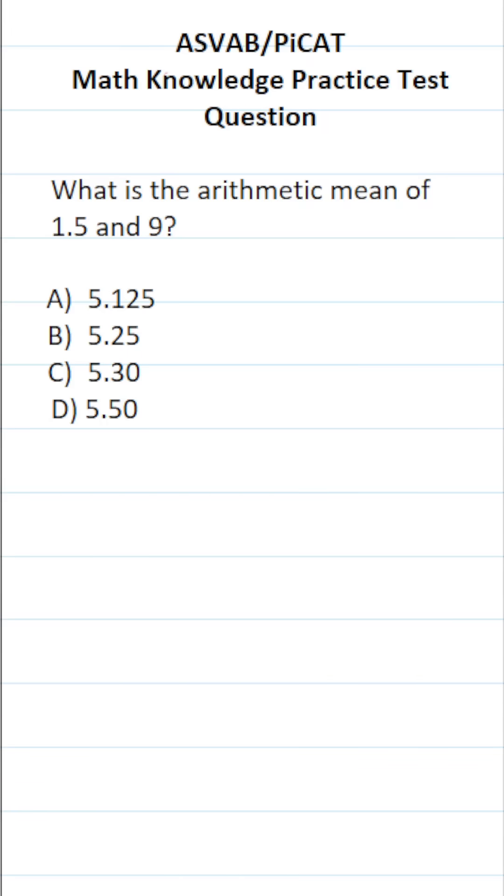This math knowledge practice test question for the ASVAB and PiCAT asks, what is the arithmetic mean of 1.5 and 9? To find the mean, you're always going to sum the numbers you're given and divide by how many numbers you added up.